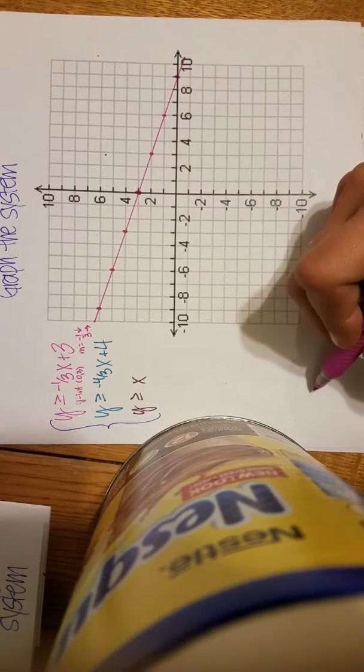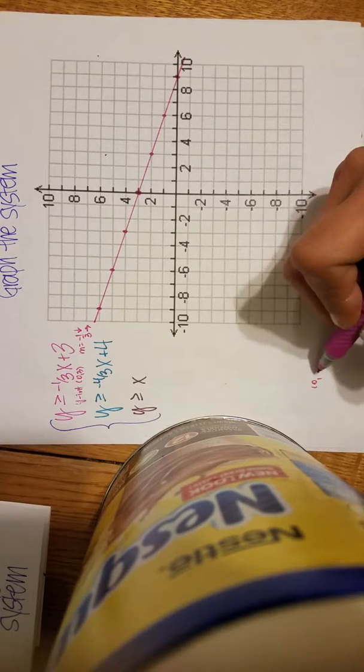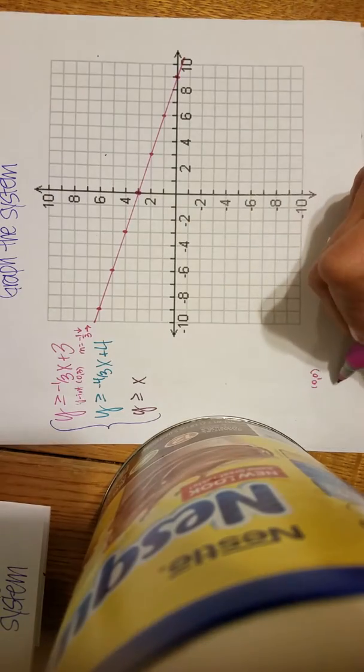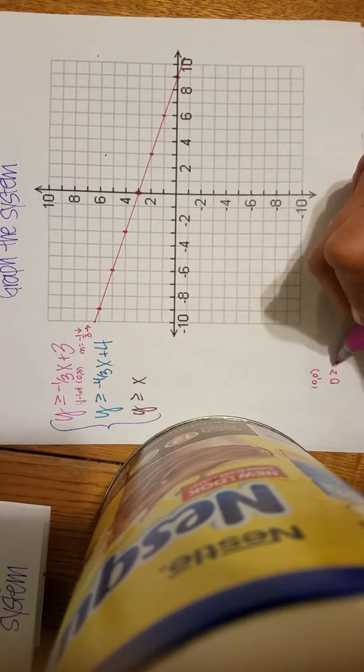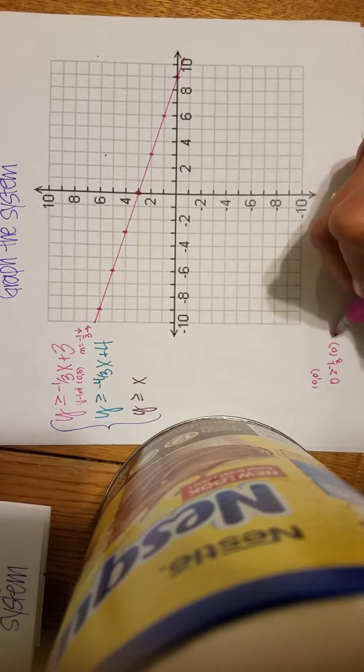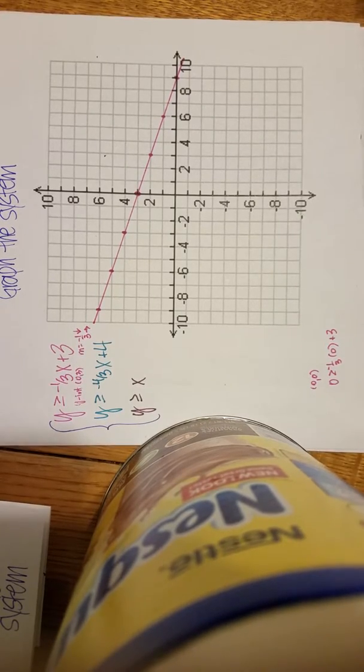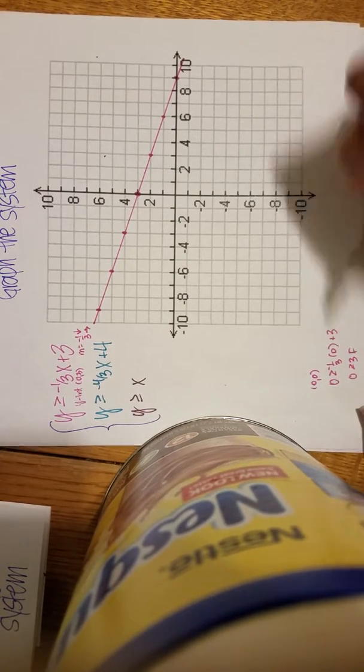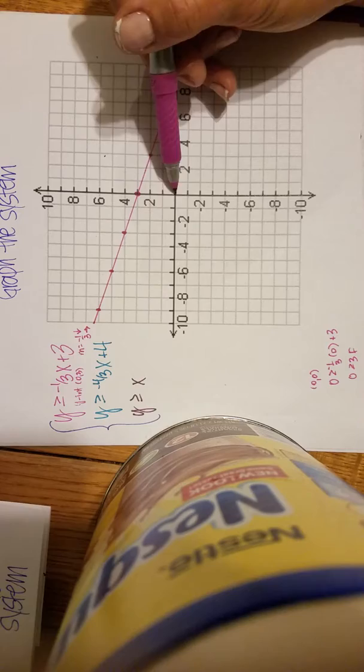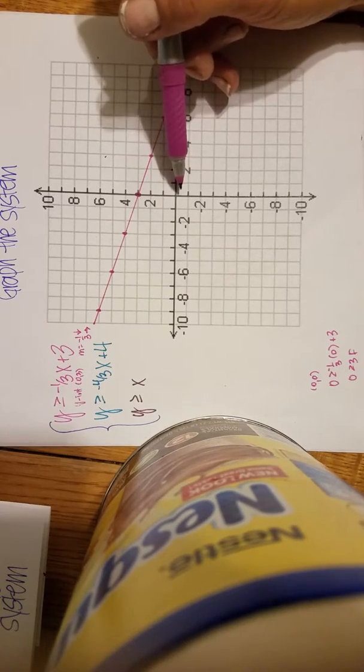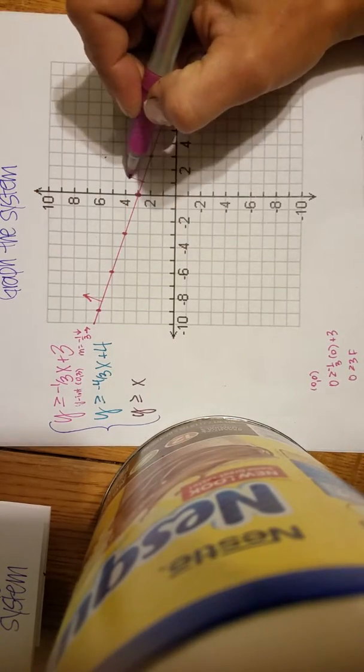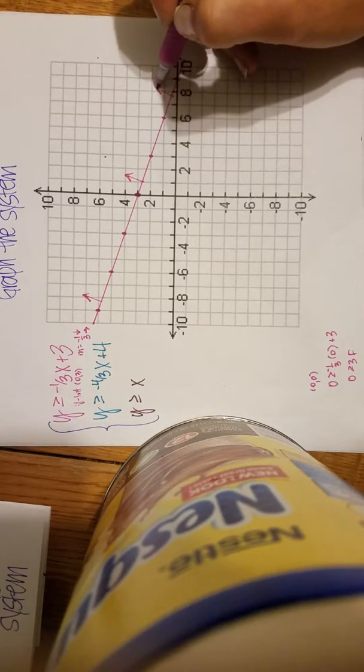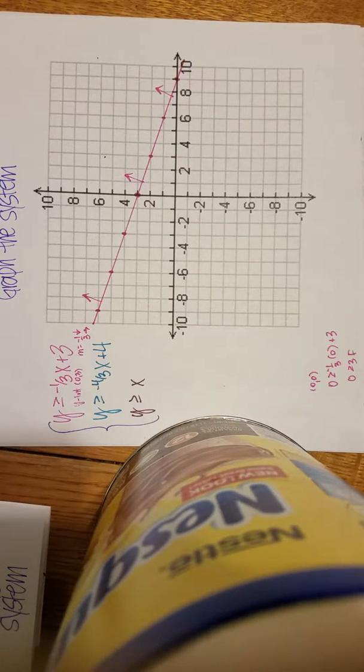So I'm going to pick a test point of zero, zero. And in this pink inequality, I'm going to replace the Y with zero and the X with zero. And when I do that, I get zero is greater than or equal to three, which is false. So the zero, zero side of the line, which is beneath it, is the false side. Therefore, above this line is going to be the true side. And I'm just going to use arrows so that my picture doesn't get too crowded for your view. And now I'm going to move on to the next inequality.